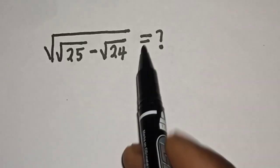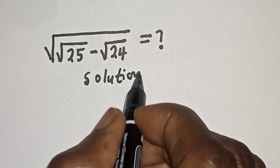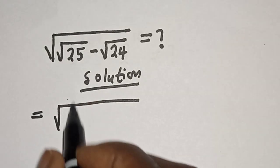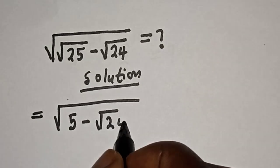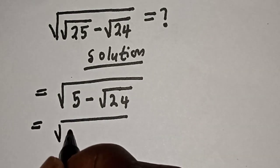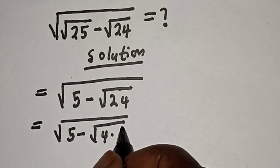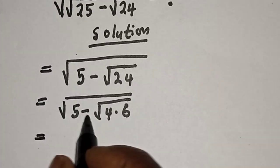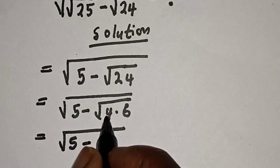Solution: we have square root of — square root of 25 is 5 — minus square root of 24. This is equal to the square root of 5 minus square root of 24, where 24 is 4 multiplied by 6. Then this is equal to square root of 5 minus square root of 4 is 2, multiplied by root 6.